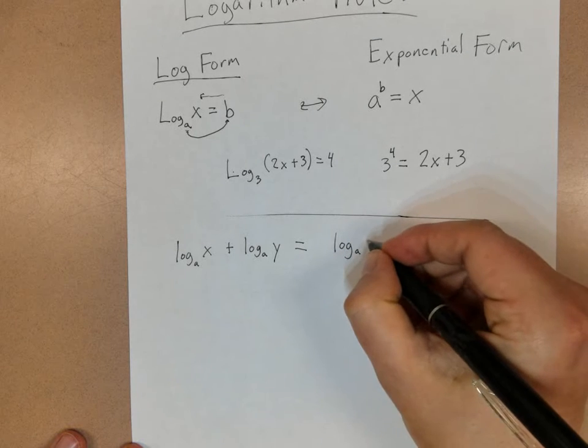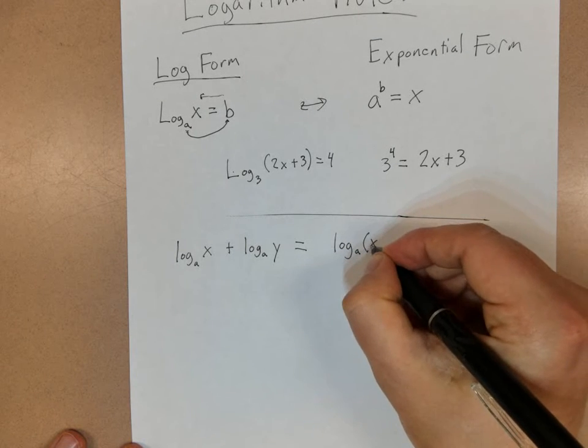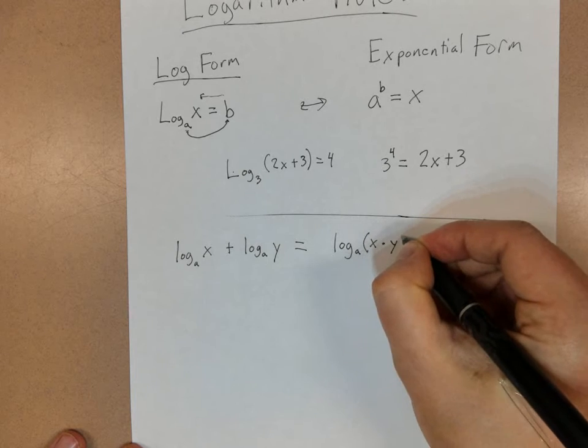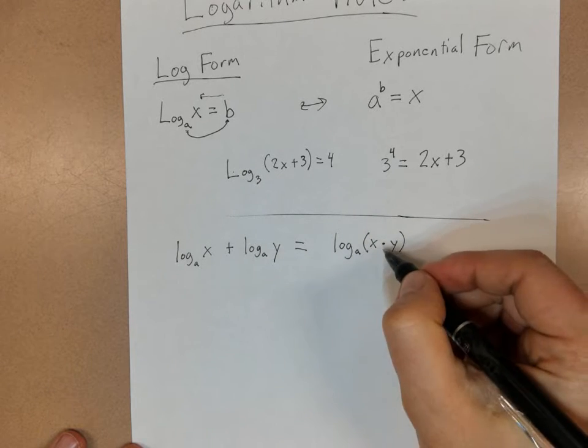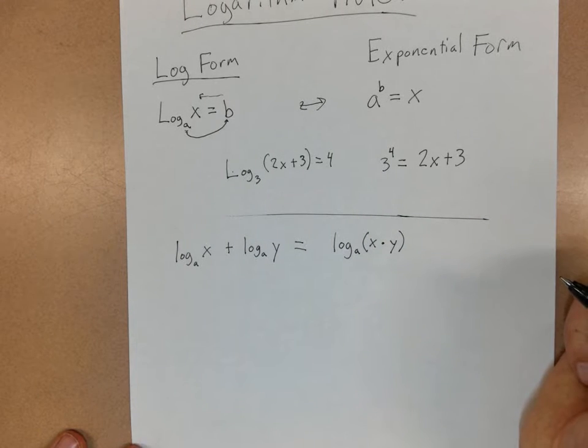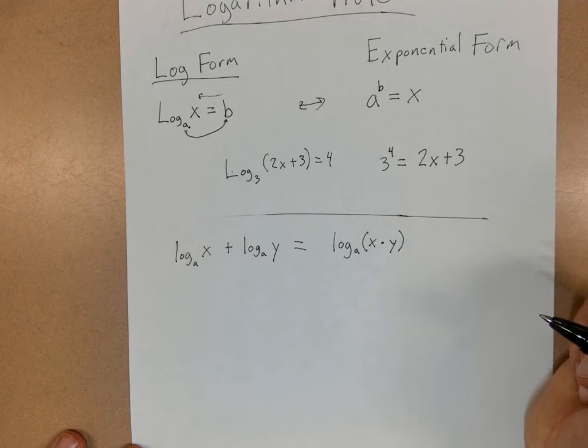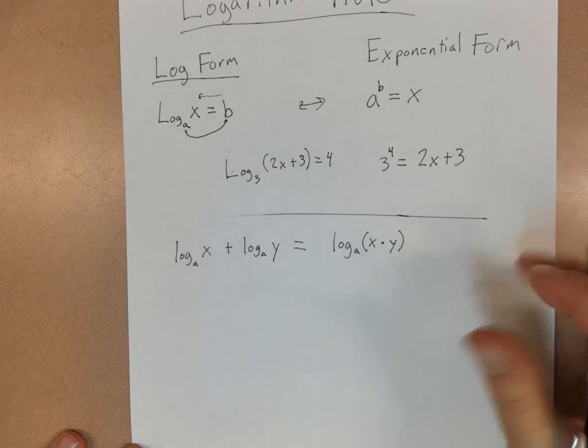So this would be log base A of x times y. So whenever you're adding logs, you can take whatever you're taking the log of and just multiply that on the inside. And again, that works both ways.